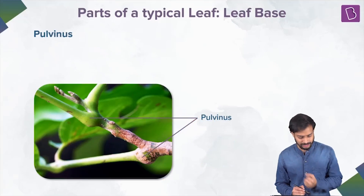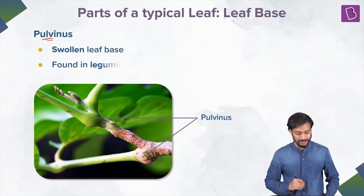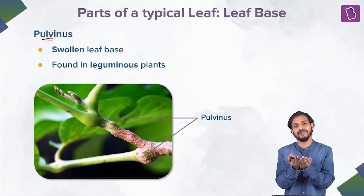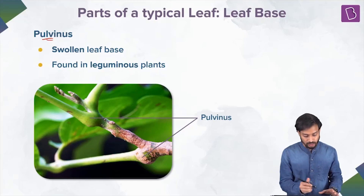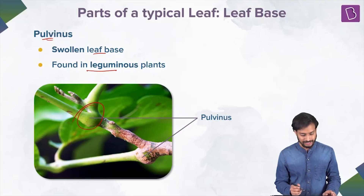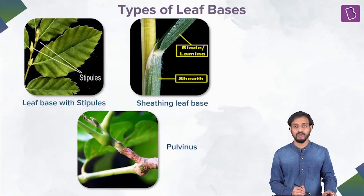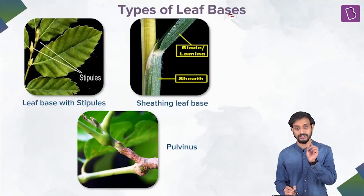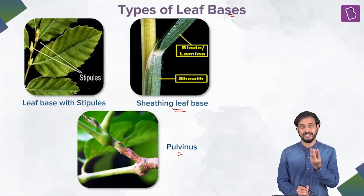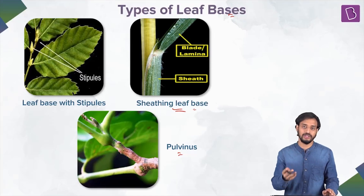Now let me talk about another type of modification — a different form called pulvinus. Can you see the difference? The difference is it's a swollen leaf base. In the previous one it was broadened and flattened, but here pulvinus is basically a swollen leaf base found mostly in the leguminous plants. So we have talked about these different types of leaf bases: leaf base with stipules born laterally, sheathing leaf base, and the pulvinus — where it is swollen — and sheathing where it forms a sheath covering the stem partially or wholly.